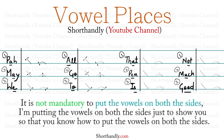For THAT, we use a light dot on the first place on both sides of the stroke and curve. For PEN, a light dot on the second place on both sides. For IS, a light dot on the third place on both sides. For NOT, a light dash on the first place. For MUCH, a light dash on the second place. For GOOD, a light dash on the third place — on the stroke and curve on both sides. That's how we put the vowels keeping in mind the correct places.